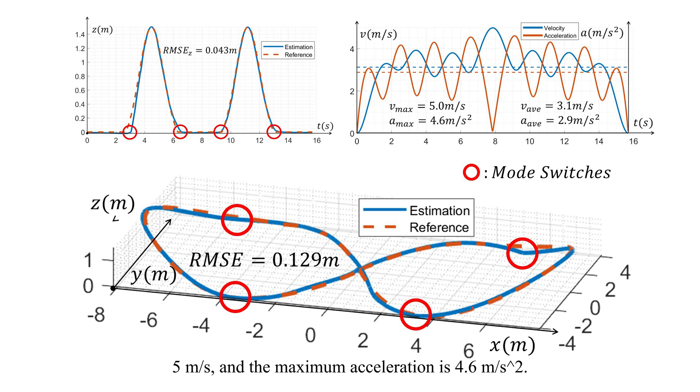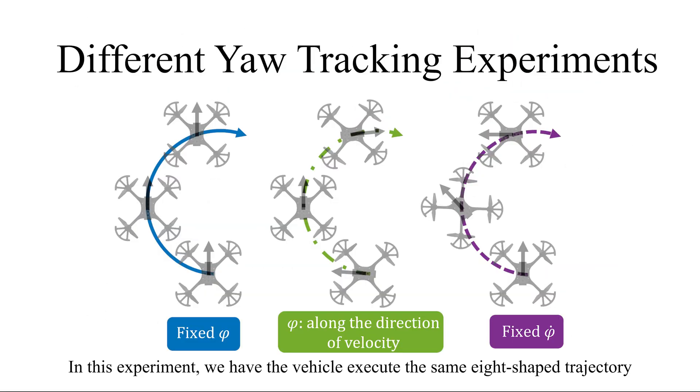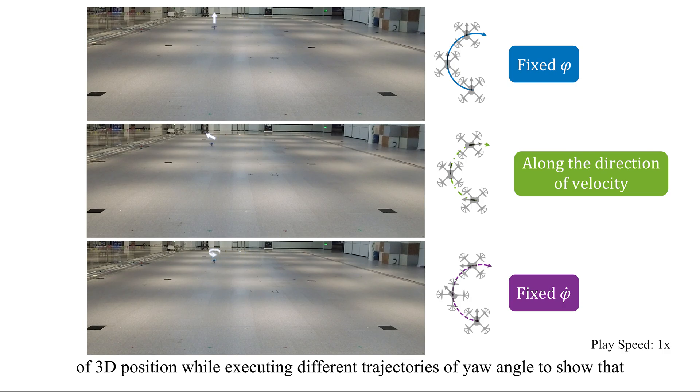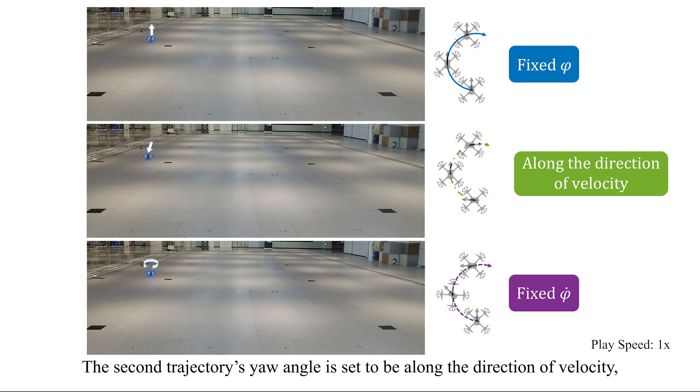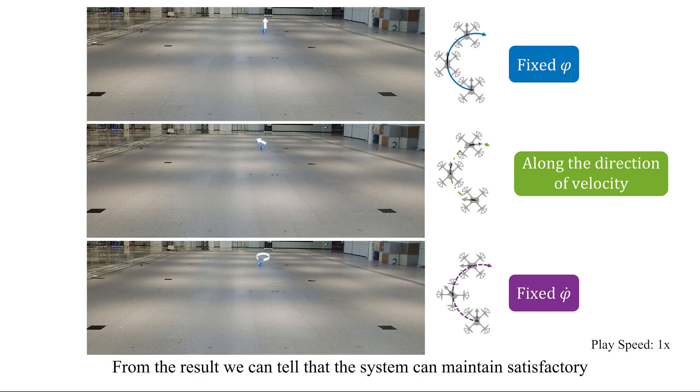In this experiment, we have the vehicle execute the same H-shaped trajectory of 3D position while executing different trajectories of yaw angle to show that the vehicle can execute free 3-DOF motion in ground locomotion. The first trajectory's yaw angle is fixed to zero, the second trajectory's yaw angle is set to be along the direction of velocity, and the third trajectory's yaw angle rate is fixed to pi.